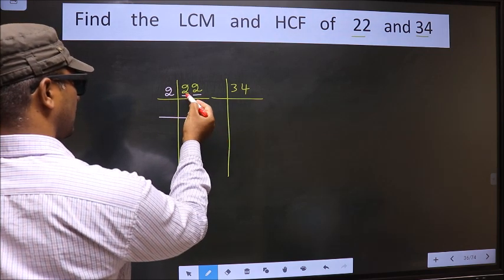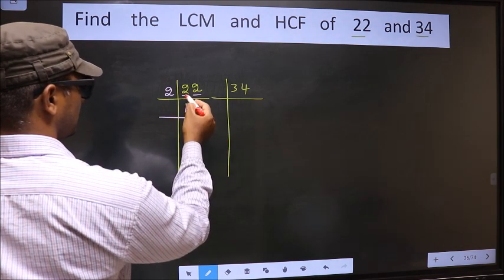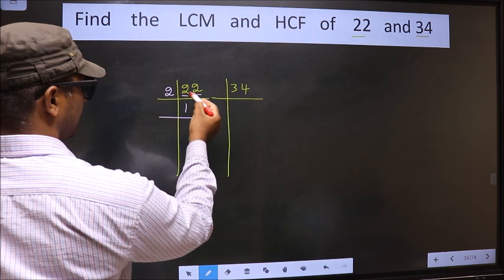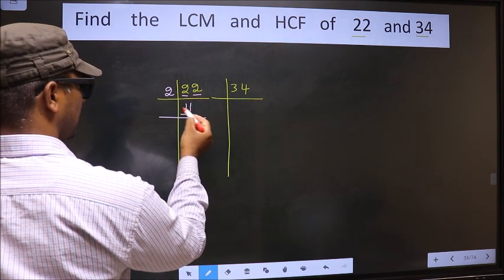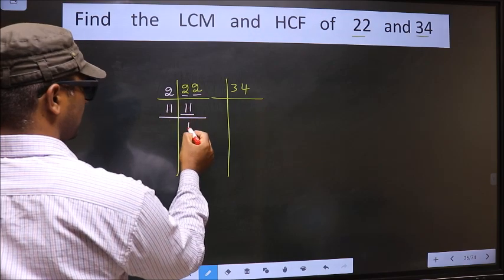The first number 2, when do we get 2 in the 2 table? 2 once, 2. The other number 2, when do we get 2 in the 2 table? 2 once, 2. Now here we have 11. 11 is a prime number, so 11 once, 11.